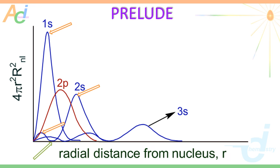Now moving on to p orbitals. This is the Radial Probability Distribution Curve for the 2p orbital, shown in red color. It has only 1 peak, which means there is no radial node. It is just like the 1s orbital.